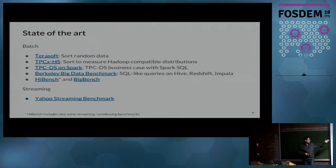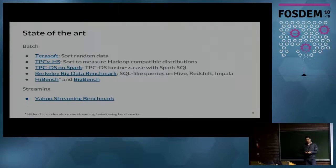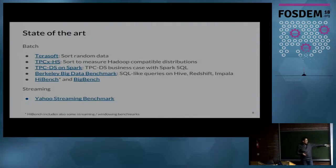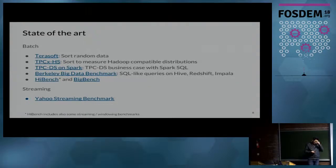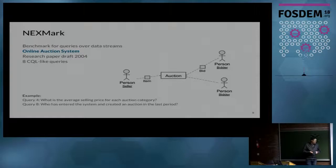The state of the art: we have TeraSort for sorting random data, TPC-X-HS for evaluating Hadoop distributions, TPC-DS written for Spark which is really complete but works only on Spark, Intel's HiBench or BigBench which cover many cases including some streaming. And finally, the Yahoo Streaming Benchmark published two years ago, which really moved the streaming community with back-and-forth competition between Spark, Flink, and others.